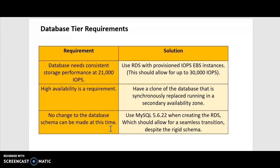In terms of the database tier, I was thinking of using RDS with provisioned IOPS with elastic block storage instances, which would allow up to around 30,000 IOPS. For high availability, I will have the databases across the two availability zones, because you have a clone of the current database that's synchronously replicated and is running in a secondary availability zone. No change to the database schema can be made at this time, but that's not a problem — you can use MySQL 5.6.22 when creating the RDS, which should allow for a seamless transition.